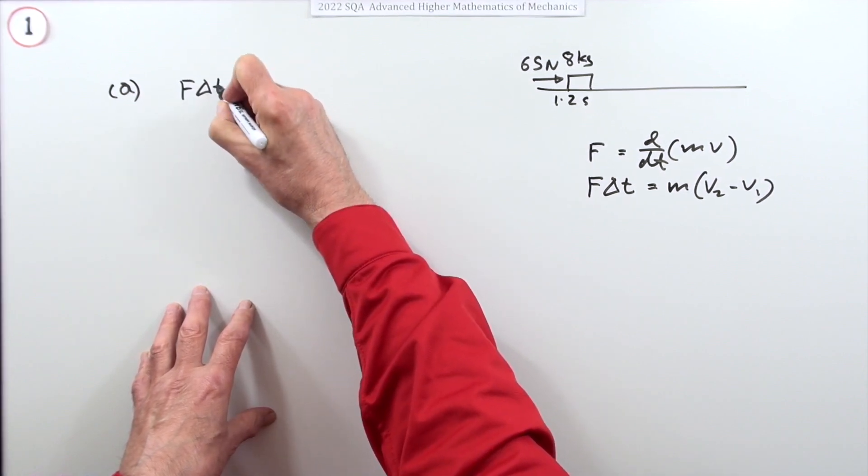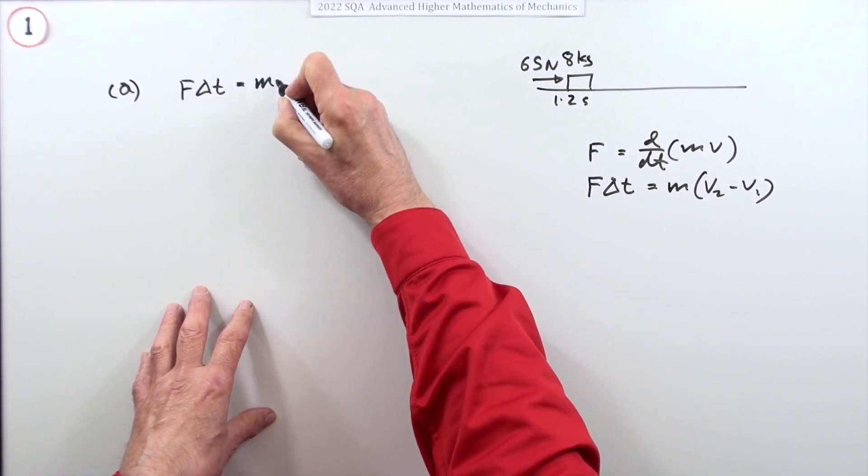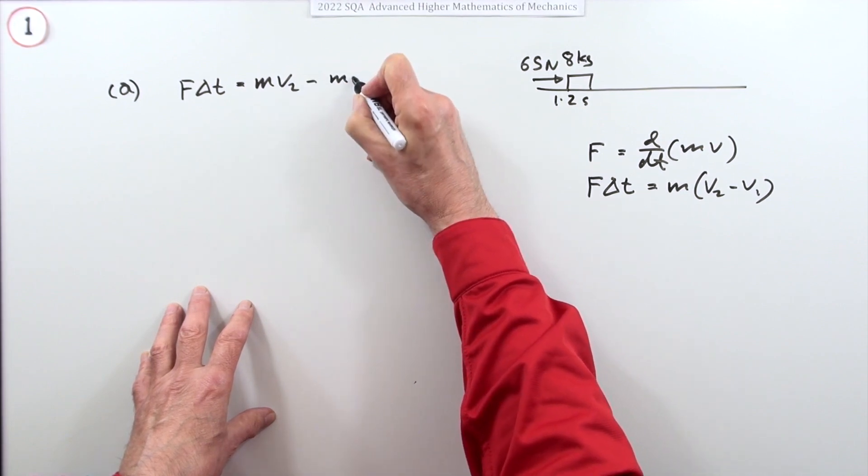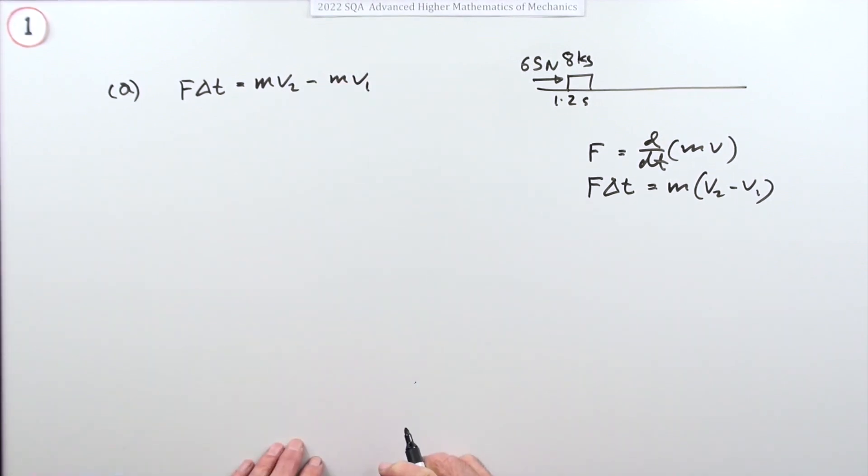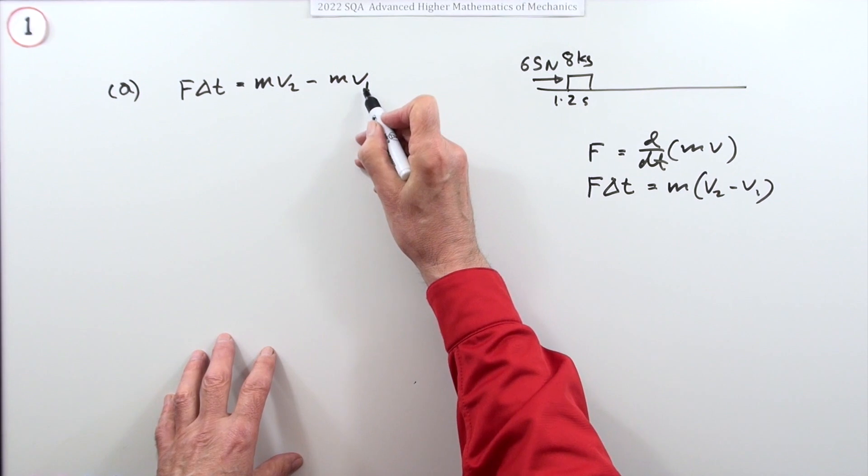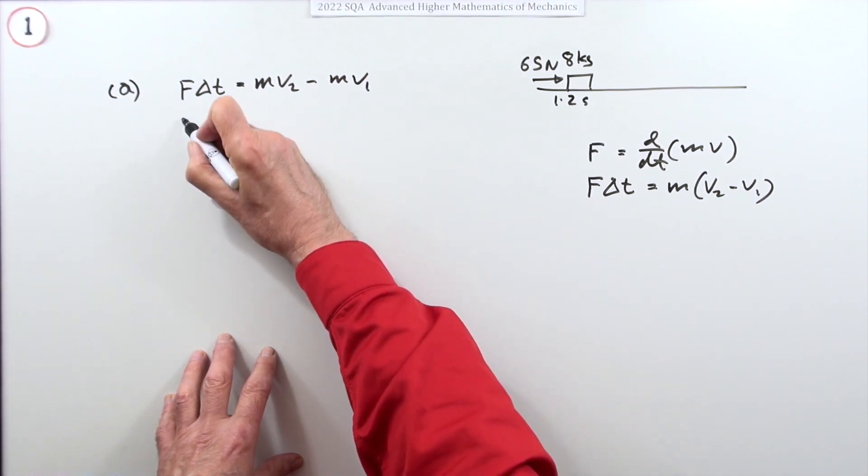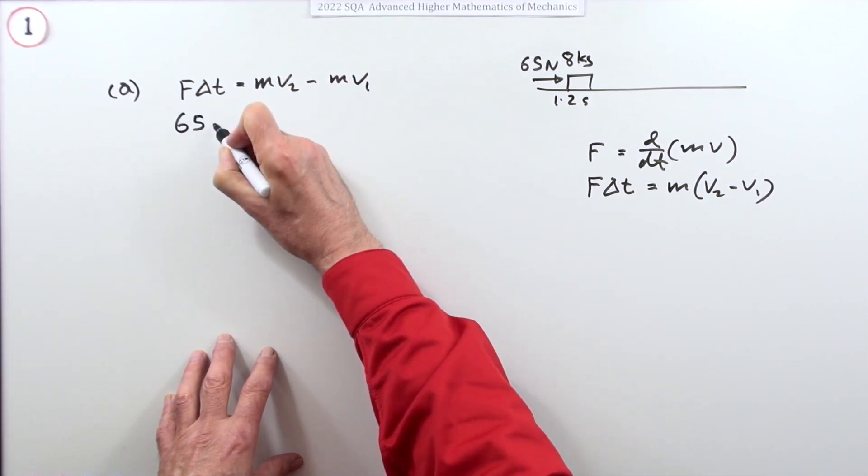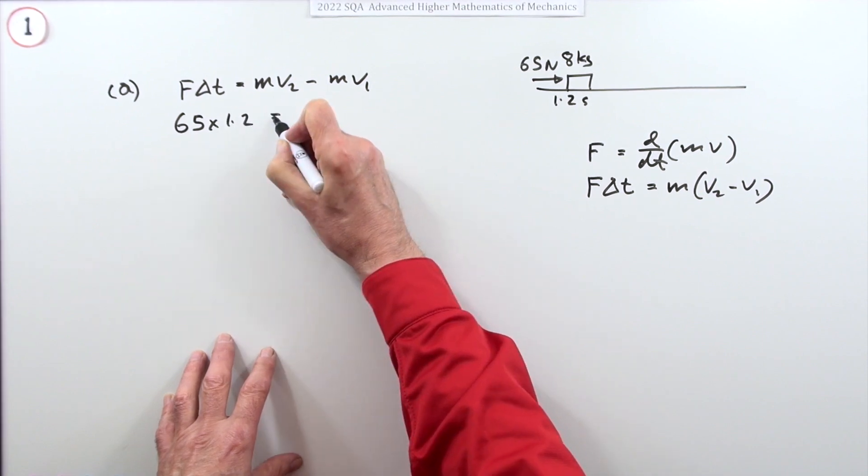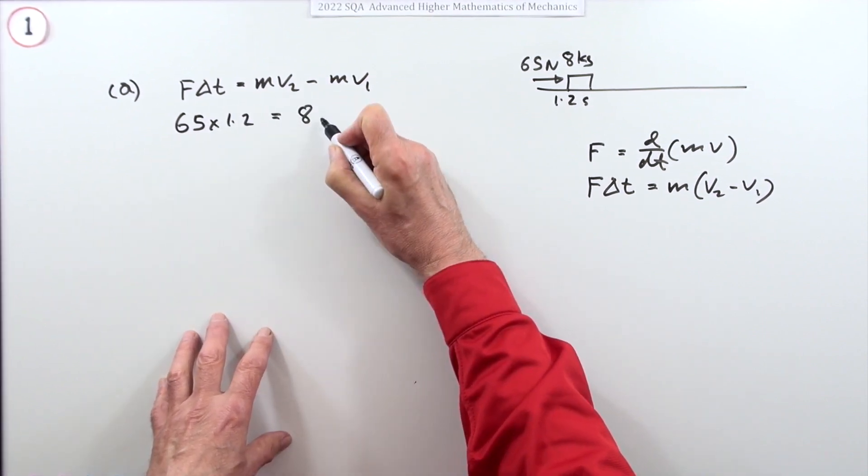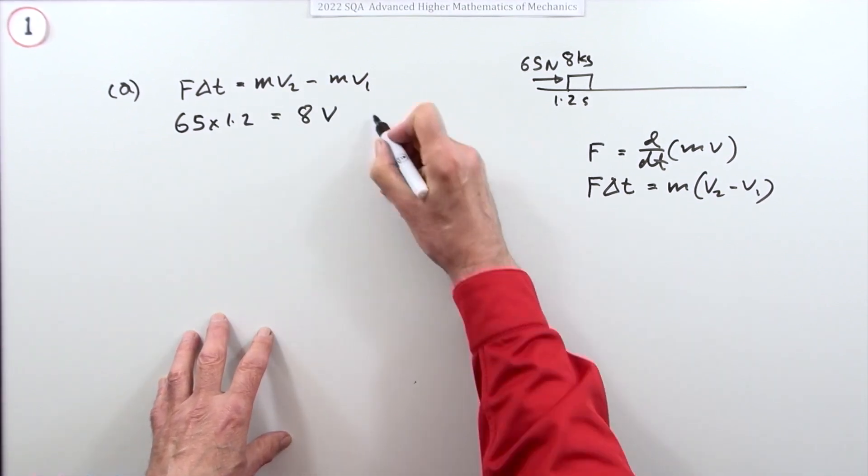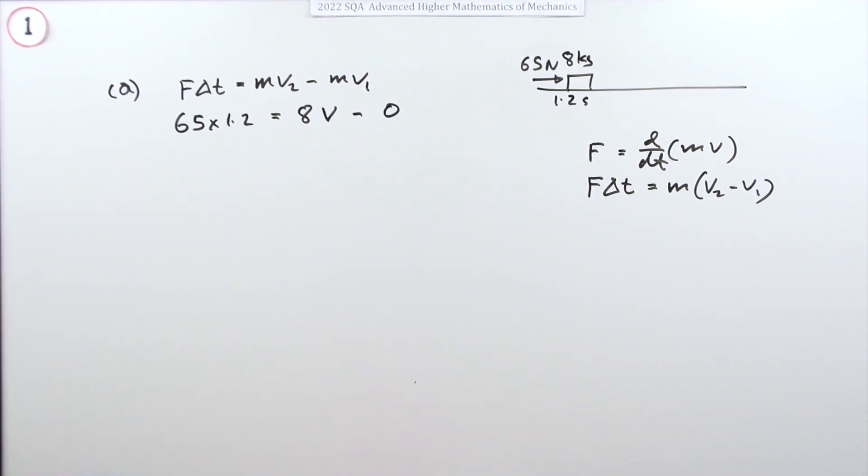So you might as well—the impulse F Δt equals m v2 minus m v1 for a constant mass. Now it's at rest so that's zero. So what you've now got is the force, 65 times 1.2, is going to be the mass which is 8.